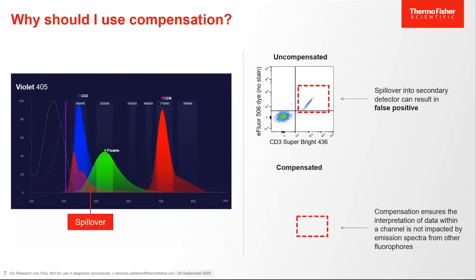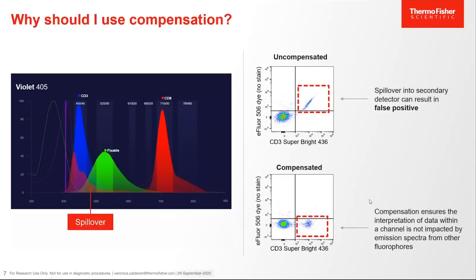Why should I use compensation? Spillover into a secondary detector can result in false positives. This can especially be an issue when another marker is used in that secondary detector. Compensation ensures the interpretation of data within a channel is not impacted by the emission spectra from another fluorophore.